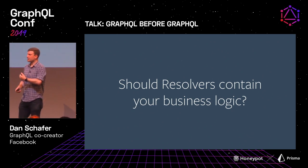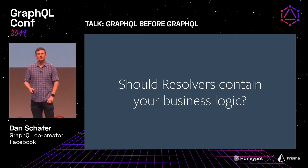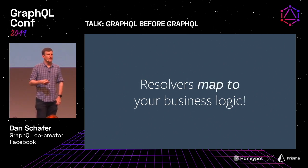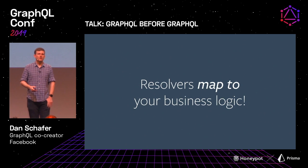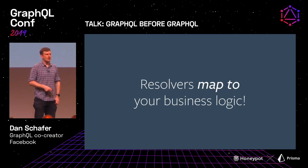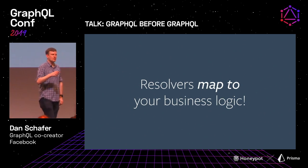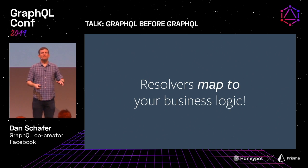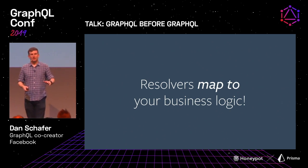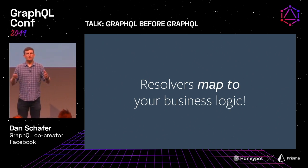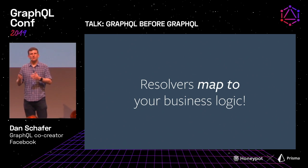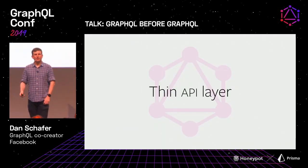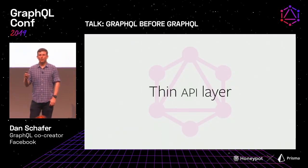One question I'll occasionally hear is: are resolvers what should contain your business logic? I generally advise no. Resolvers should map to your business logic, not contain it. If you look at resolvers at Facebook, they are generally very thin and sometimes nonexistent, because we want the business logic to be in a single place. It's a thin API layer. The reason GraphQL doesn't answer those four questions is not by omission — it's by design.